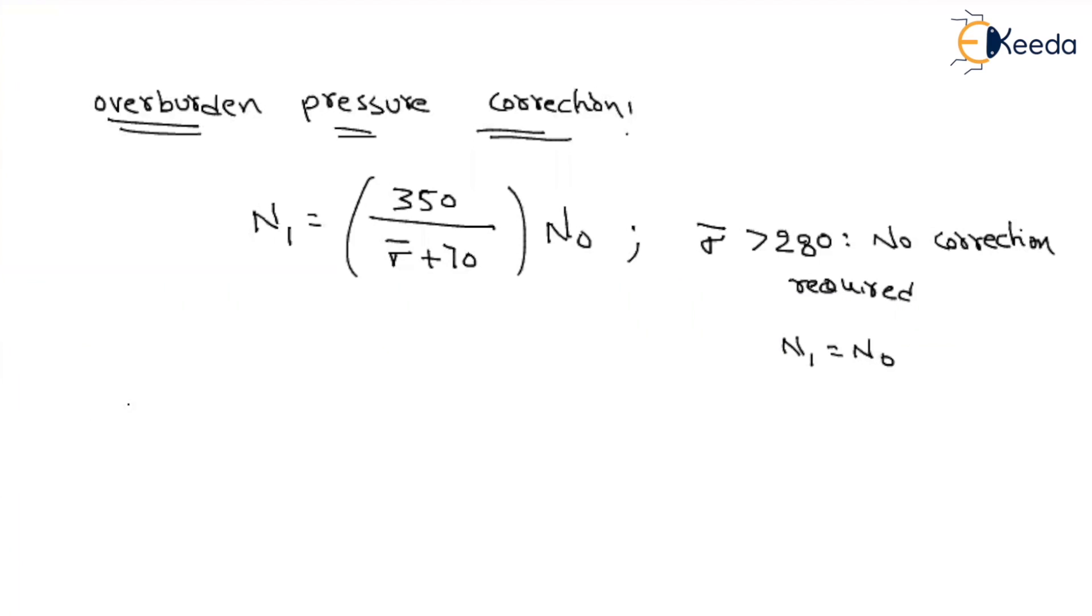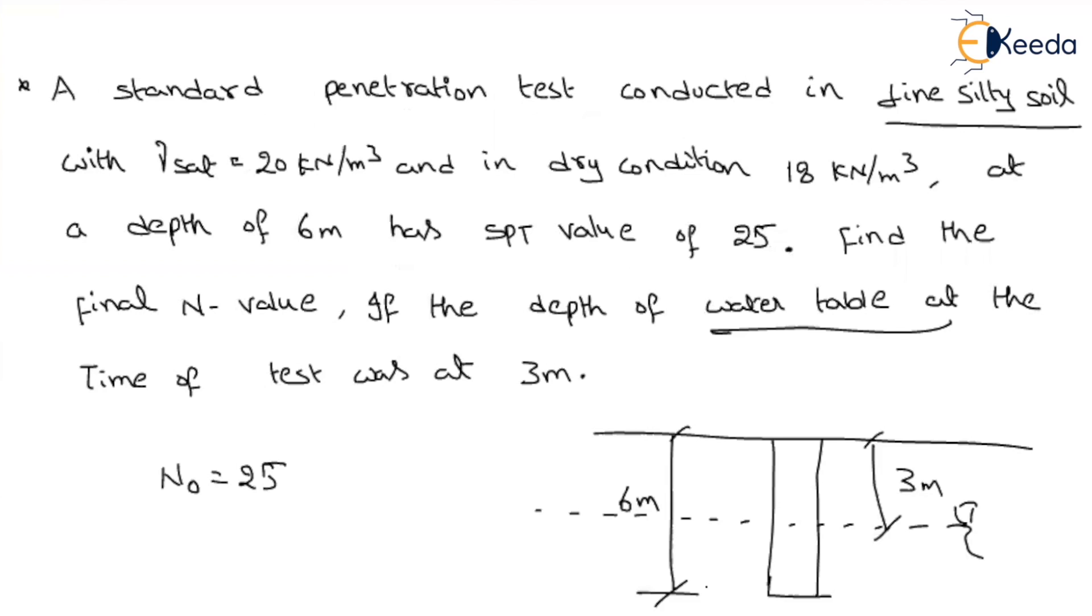Now, let us see what is mean by overburden pressure here. That means at the test level, if you are conducting test here, what is the vertical pressure acting on this level? That is because of the self-weight of the soil. What is the self-weight of the soil? In this up to 3 meter, we are in dry state, dry condition. On the next 3 meters, we are under the submerged condition. Here you have to take the dry unit weight and here you have to take the submerged.